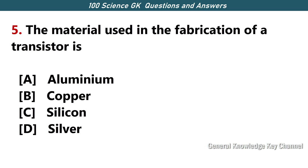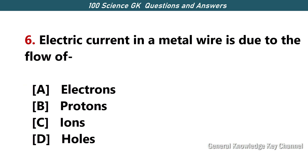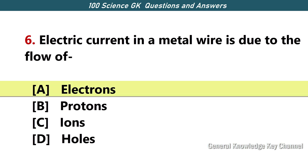The material used in the fabrication of a transistor is — Answer C — Silicon. Electric current in a metal wire is due to the flow of — Answer A — electrons.